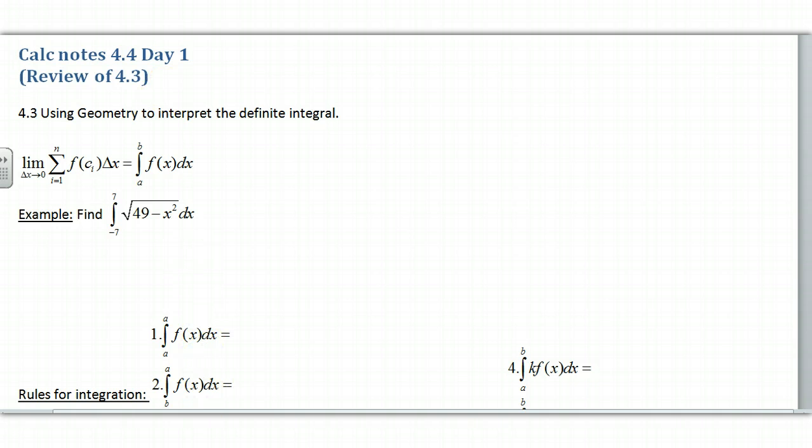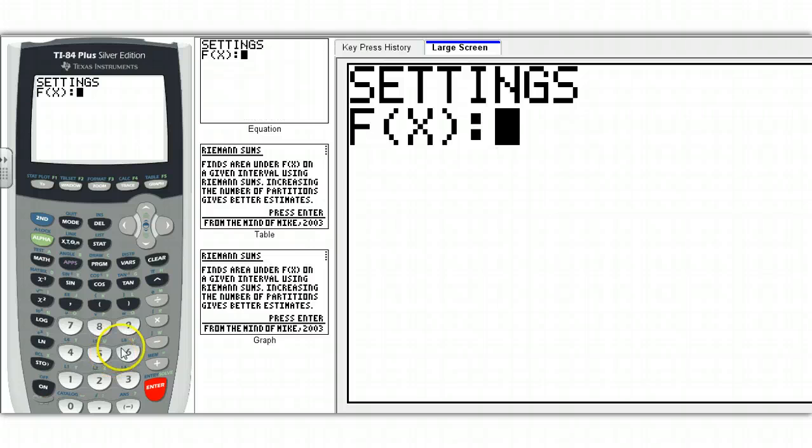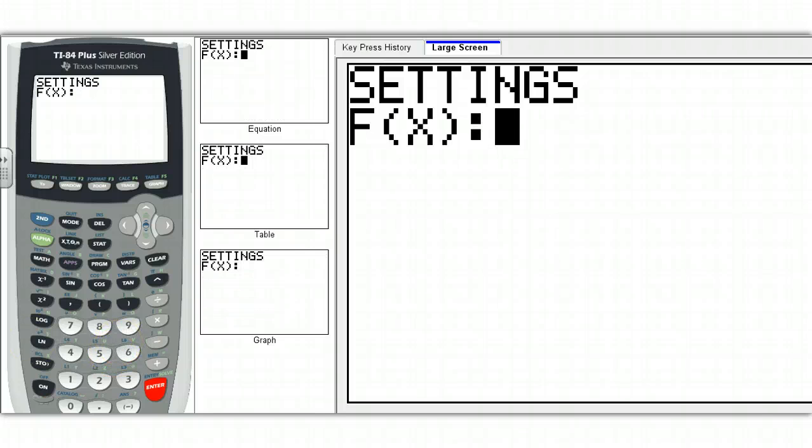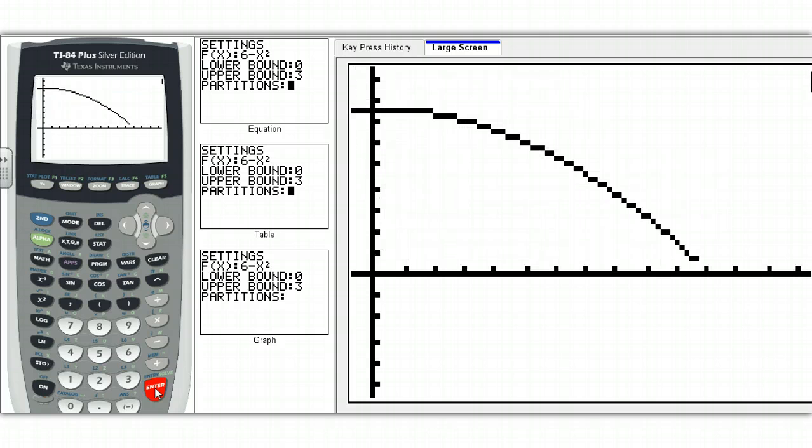Now if I take my calculator, I have a little program here and I can show you the pictures that are associated with the Riemann sums. So if I take a function, I have a function y equals 6 minus x squared. I want a left bound to be 0, upper bound to be 3, and partitions, that's our n value of 6. So the width of each one of these rectangles, well this distance is 3 and I'm splitting into 6 equal parts, it's going to be 1 half. So delta x is 1 half.